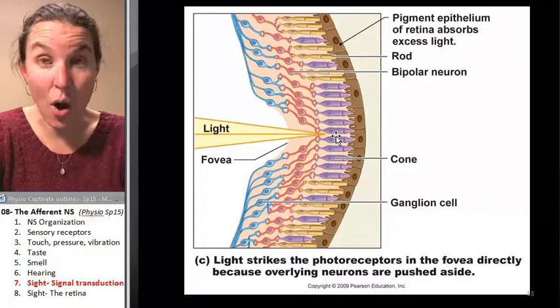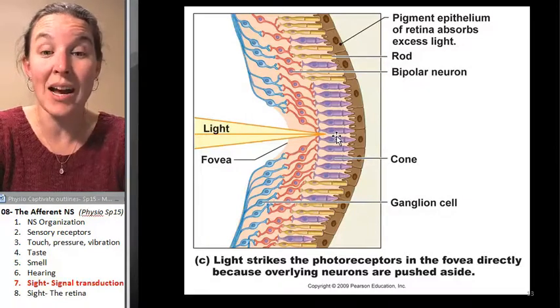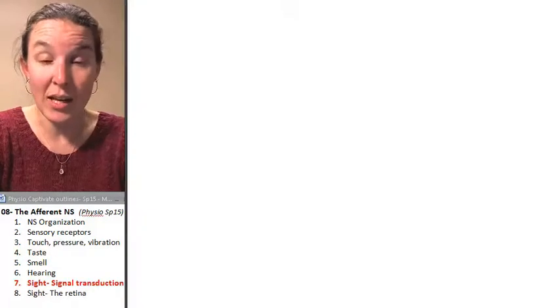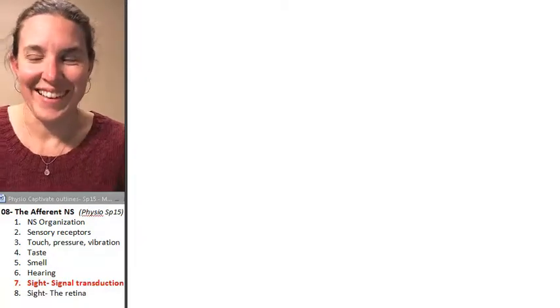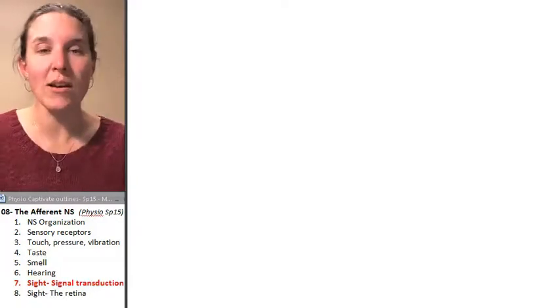In this section, all we're going to talk about are the photoreceptors, the rods and cones, and how they function, how they turn light information into an action potential, or lack thereof. That's a hint. All right. Rods, I've got to write this down.